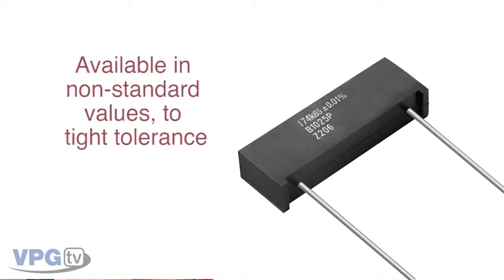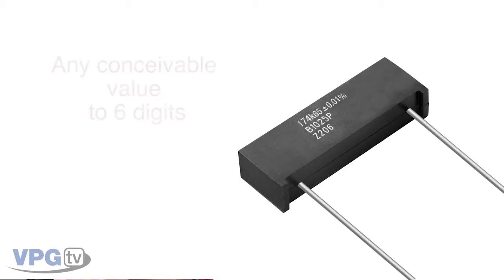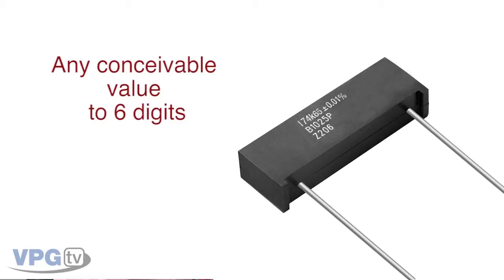I would like to mention some very important traits of the Vishay foil resistor used as a shunt resistor at this point. Notice that it is a very non-standard value, made to a very tight tolerance. All Vishay foil resistors are available in any conceivable value to 6 digits, in quantities from a single unit to thousands.